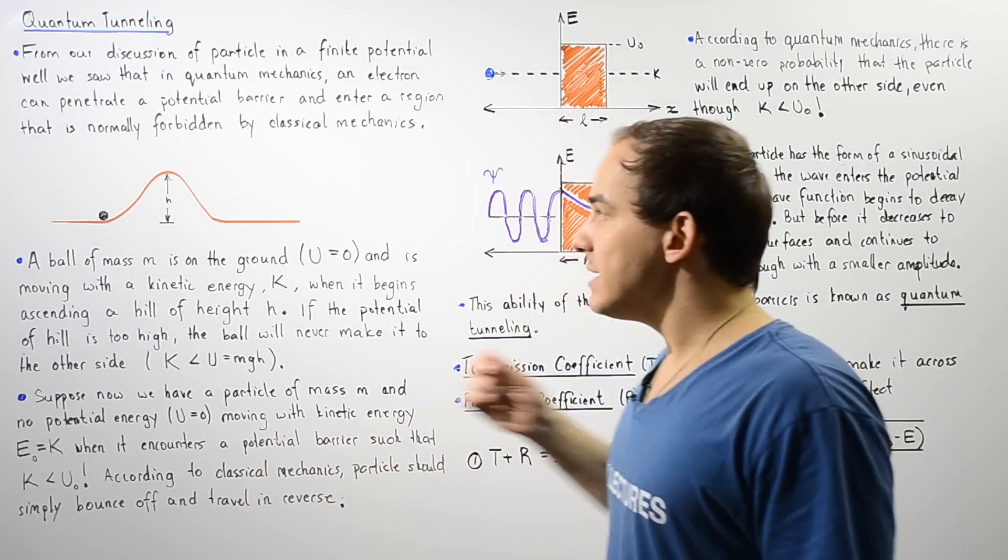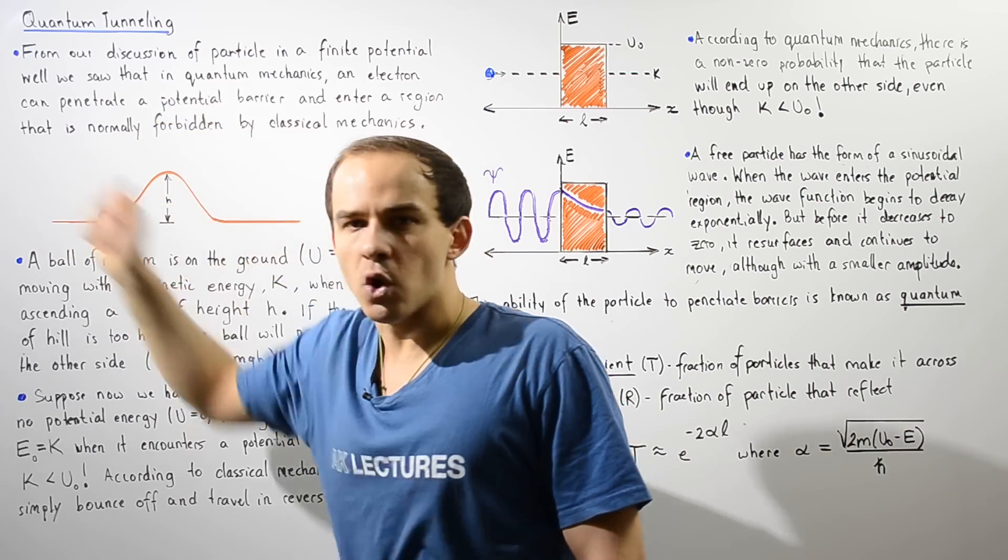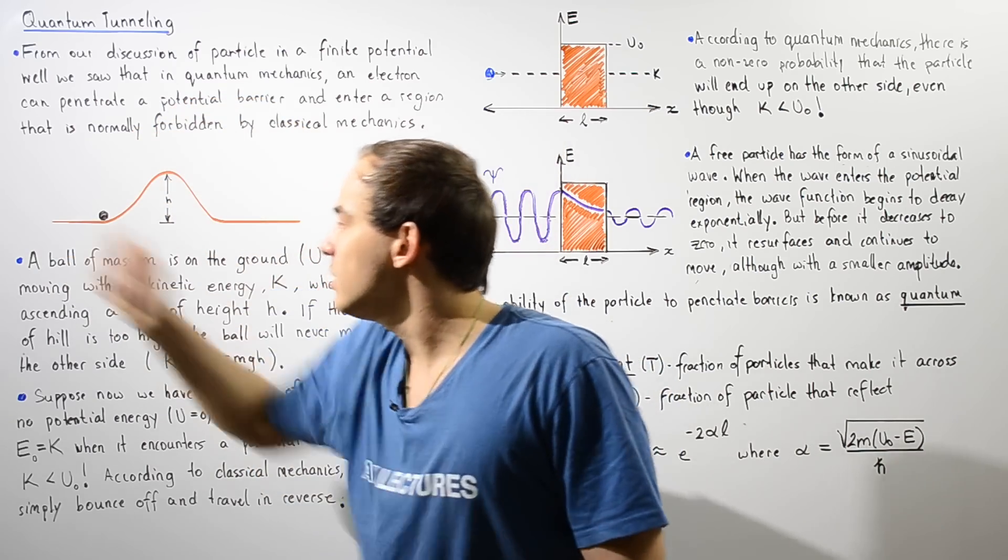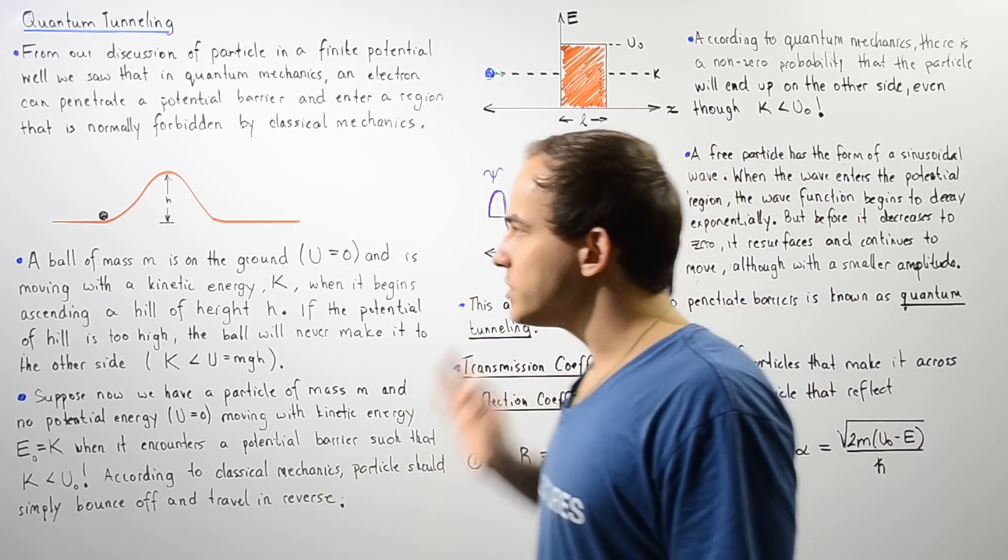So that basically means the object will end up at some position and will continue rolling back, will basically begin to roll back. Now in quantum mechanics, things aren't so simple.